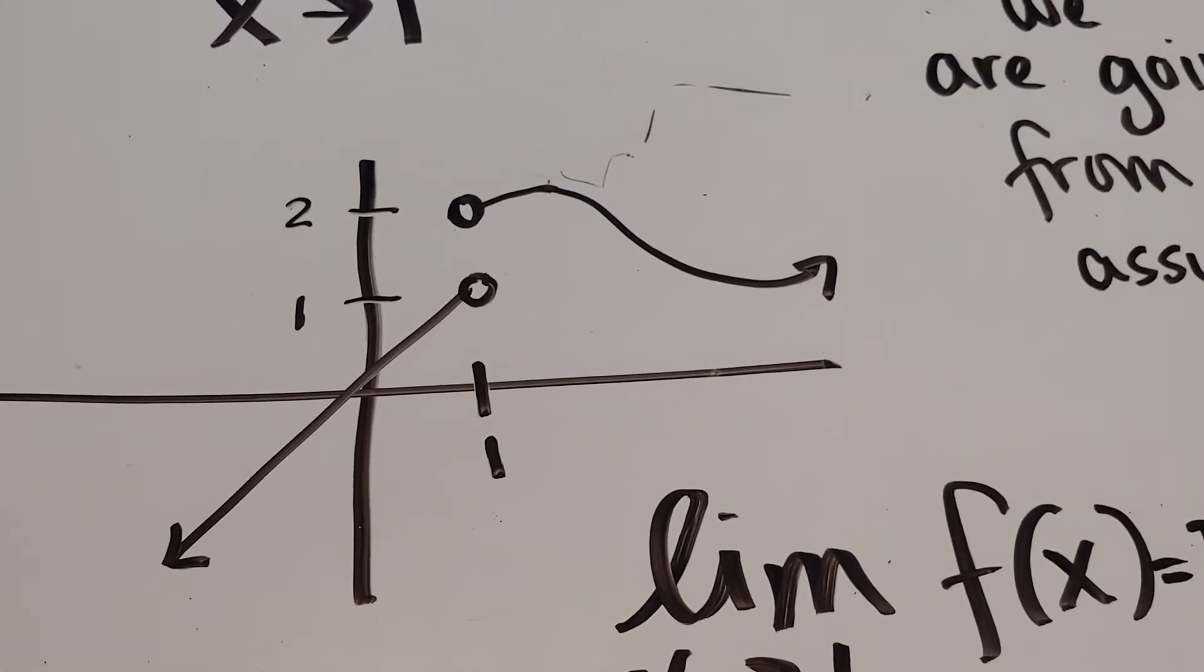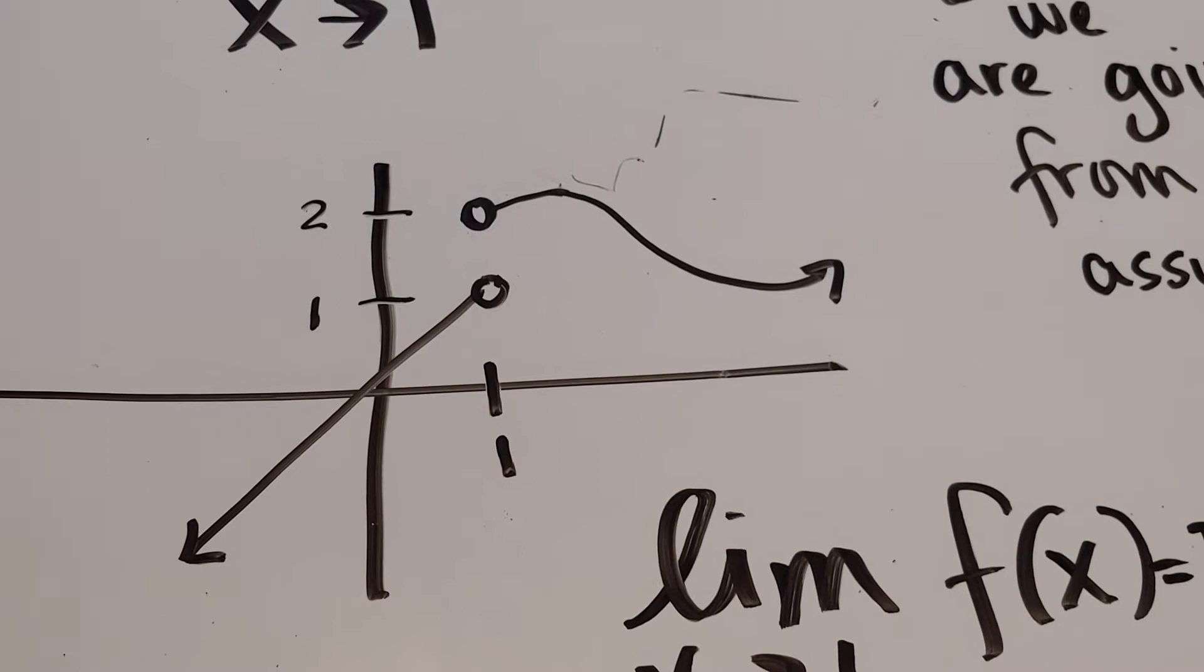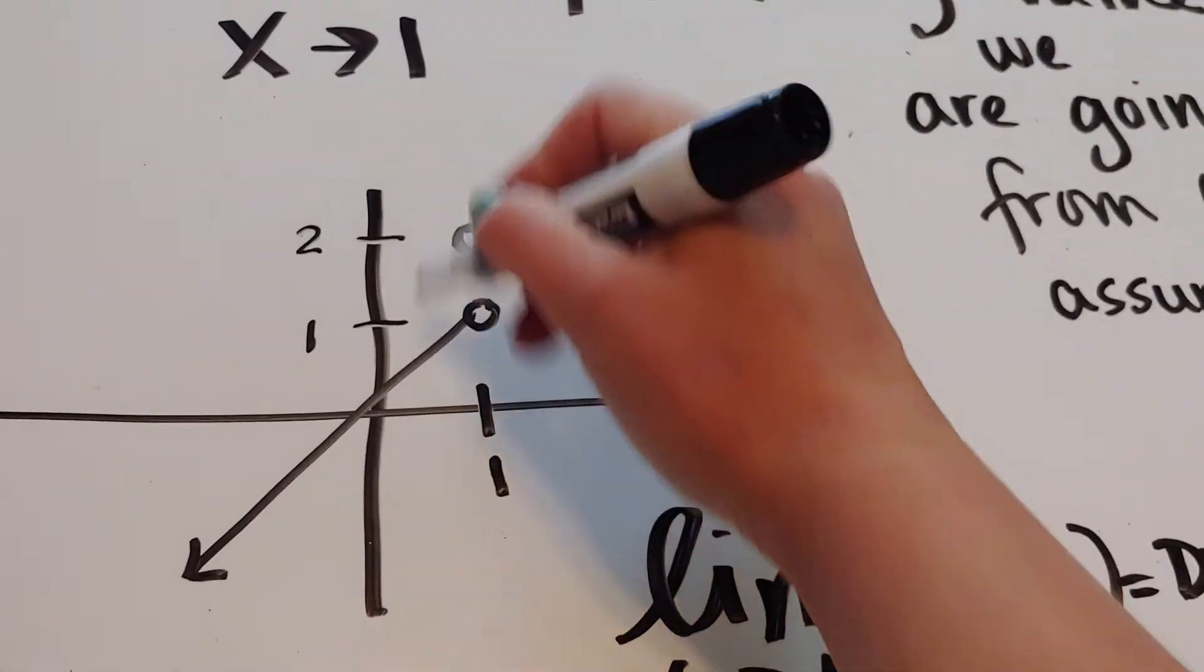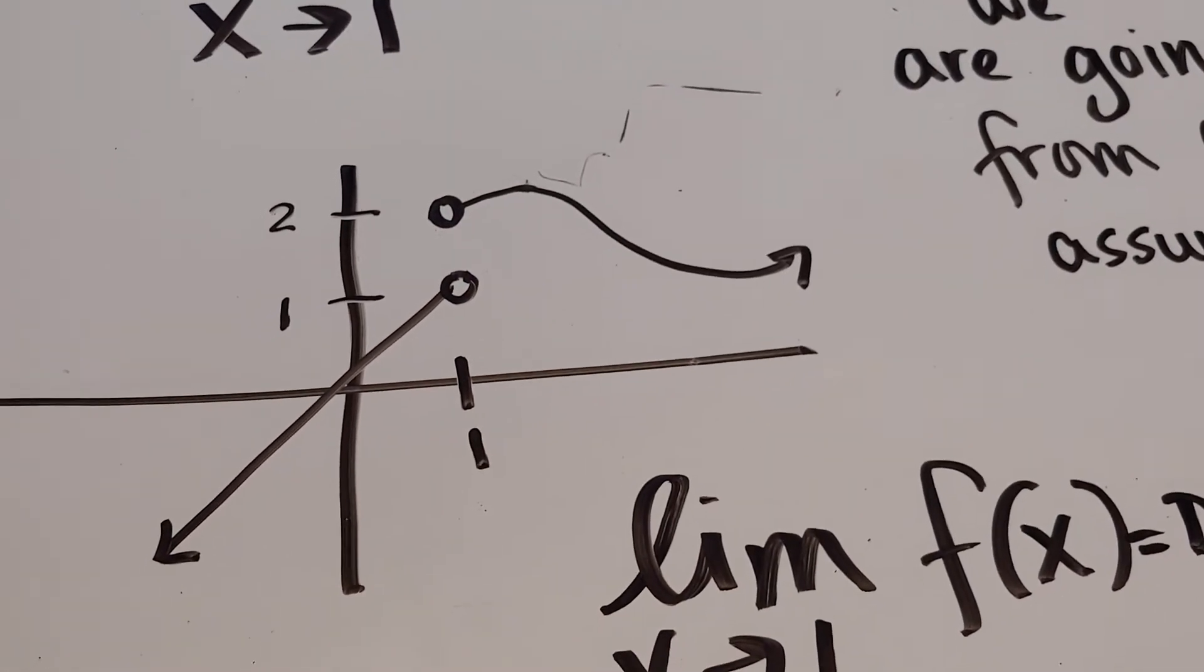A jump is a broken piece of the freeway, guys. Like the freeway ends, picks up somewhere else. So when you have a jump, the limit will always be does not exist.